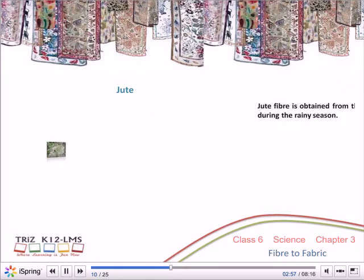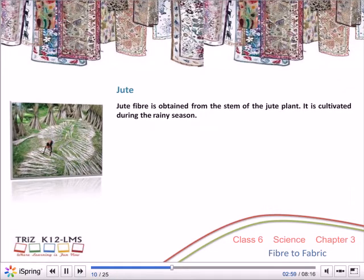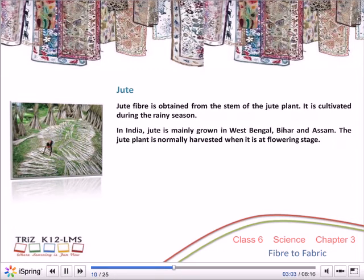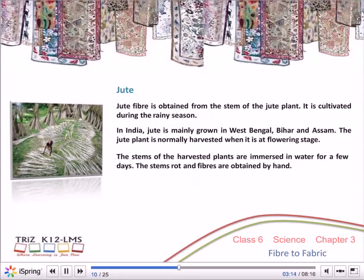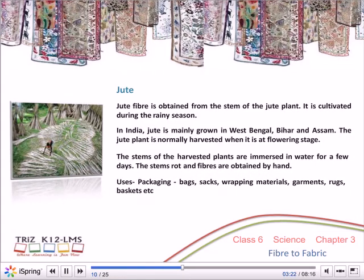Jute fibre is obtained from the stem of the jute plant. It is cultivated during the rainy season. In India, jute is mainly grown in West Bengal, Bihar and Assam. The jute plant is normally harvested at the flowering stage. The stems are immersed in water for a few days, then they rot and fibres are obtained by hand. Uses: packaging bags, sacks, wrapping materials, garments, rugs, baskets, etc.